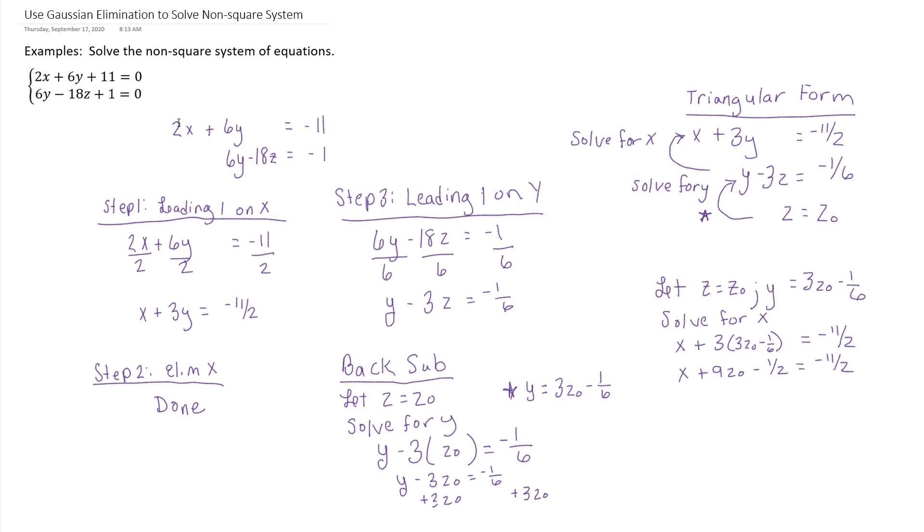And then you're wanting to solve for x, so that means get the x isolated. So I'm going to subtract off 9z naught from both sides, and I'm going to add a half. In other words, do the opposite operation to both sides. You get x equals negative 9z naught minus 11 halves plus 1 half. Simplify by combining like terms. You get negative 9z naught, and then negative 11 halves plus 1 half is negative 10 halves. But that's just negative 5.